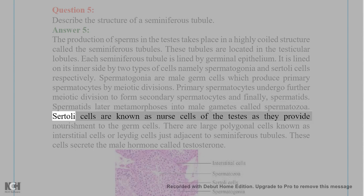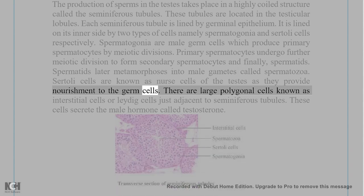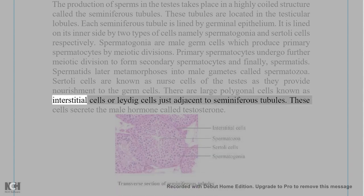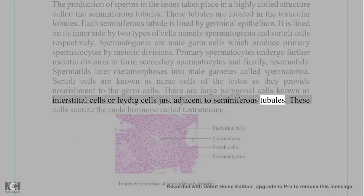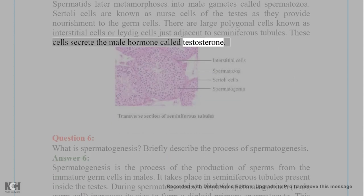Sertoli cells are known as nurse cells of the testis as they provide nourishment to the germ cells. There are large polygonal cells known as interstitial cells or Leydig cells just adjacent to the seminiferous tubules. These cells secrete the male hormone called testosterone.